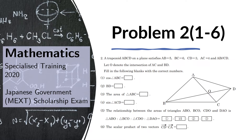Problem 2. A trapezoid on a plane satisfies AB equals 5, BC equals 6, CD equals 3, AC equals 4, and AB is parallel to CD. Let O denote the intersection of AC and BD. Fill in the following blanks with the correct numbers.